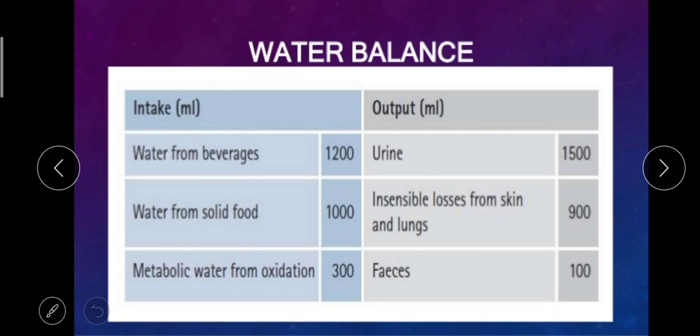Next is water balance in the human body. There is a chart showing normal intake and output, how much water you are drinking in a day and how much is going out. Everything is in milliliters. Water from beverages like tea or coffee gives us 1200 ml of water, water from solid food around 1000 ml, and metabolic water from oxidation around 300 ml. This is the intake going into our body.